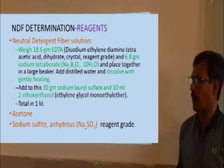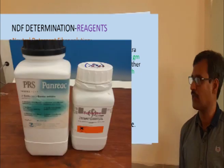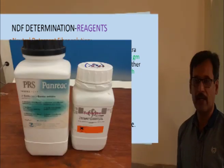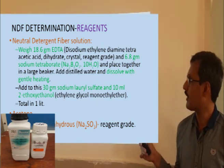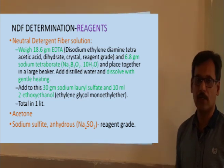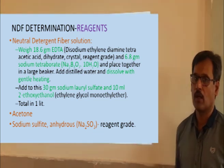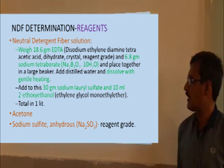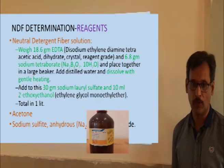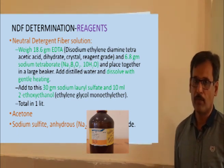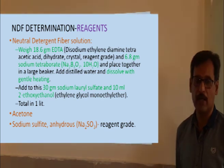The first reagent is the neutral detergent fiber solution. It is prepared by dissolving 18.6 grams of EDTA (ethylene diamine tetraacetic acid) along with 6.8 grams of sodium tetraborate in a beaker with gentle shaking. If these two chemicals do not dissolve, apply gentle heating. Then add 30 grams of sodium lauryl sulfate and 10 ml of 2-ethoxyethanol. Mix all together and make up the total volume to one liter. This one liter is the NDF solution.